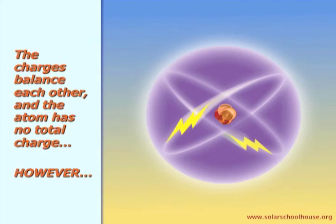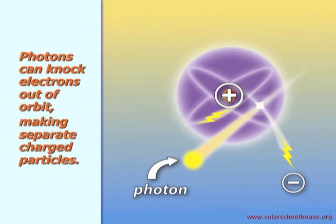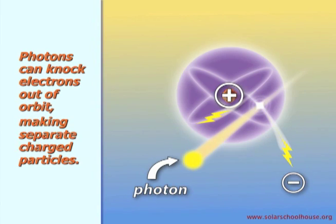The nucleus has a positive charge. So we have negatively charged electrons orbiting a positively charged center. The negative and positive charges in this atom balance each other out, and the atom has no electrical charge. However, sunlight can actually knock electrons out of their orbit around the center of the atom. To understand how this works, we need to know that light itself is made of particles. Particles of light are called photons. When photons hit electrons, they give the electron some of their energy. If they give the electron enough energy, it leaves its orbit around the nucleus of the atom.